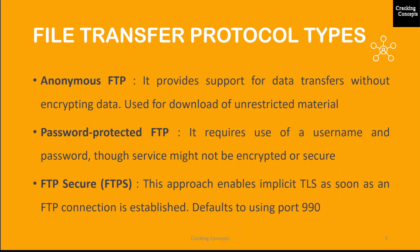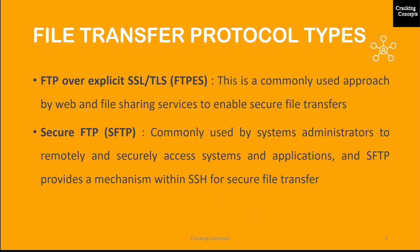Next is FTP Secure, or FTPS, sometimes referred to as FTP SSL. This approach enables implicit transport layer security as soon as an FTP connection is established, and it typically defaults to port number 990. Next is FTP over Explicit SSL/TLS, also called FTPES. This approach enables explicit TLS support by upgrading an FTP connection over port 21 to an encrypted connection, and is commonly used by web and file sharing services to enable secure file transfers.